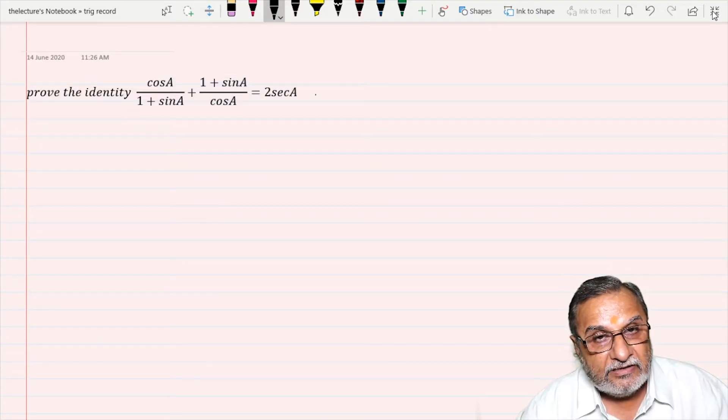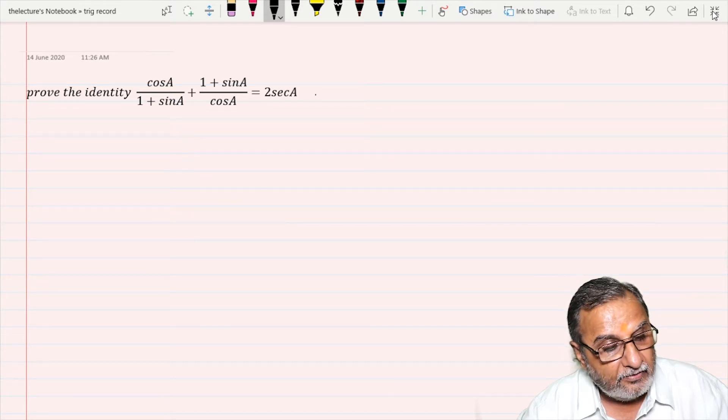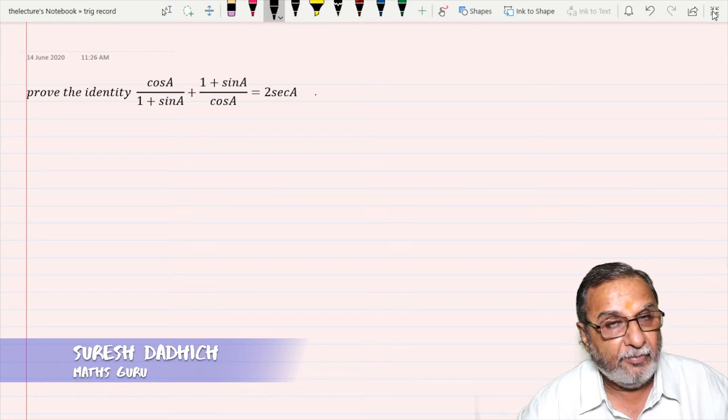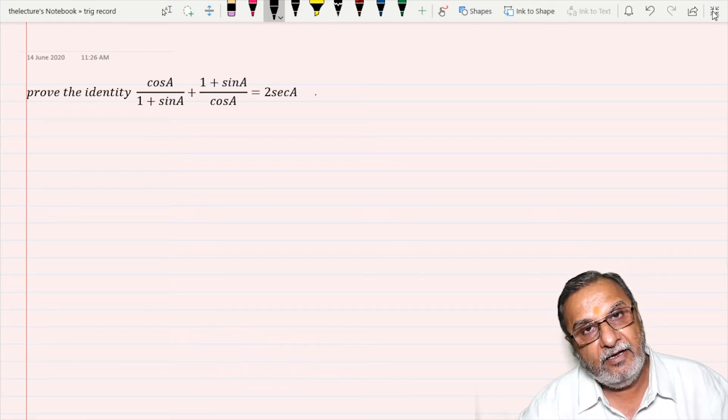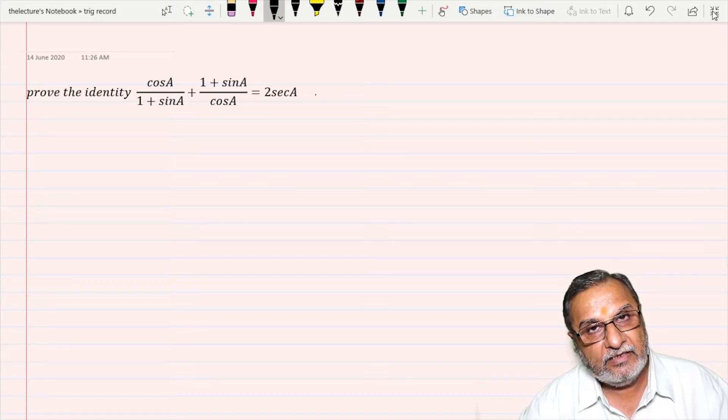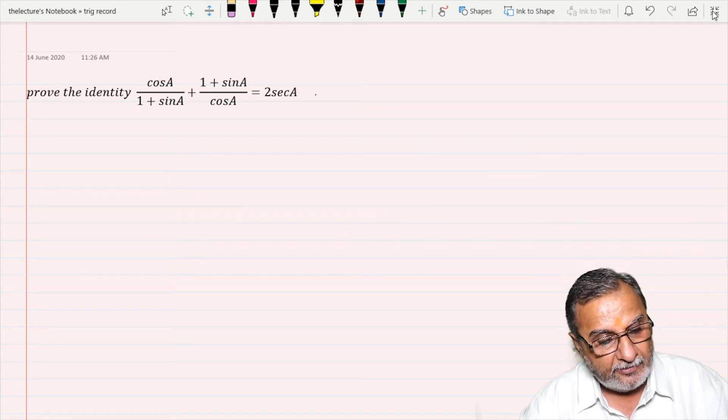Dear student, the question is taken from exercise 8.4, and the question is: prove the identity cos A / (1 + sin A) + (1 + sin A) / cos A = 2 sec A.